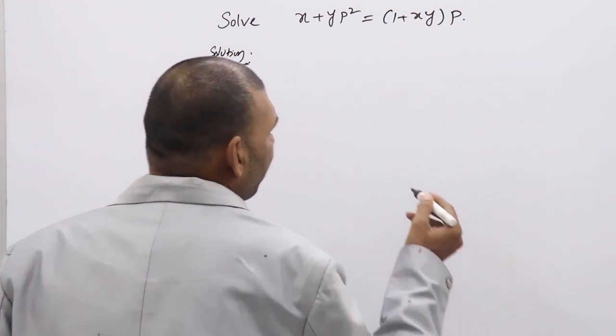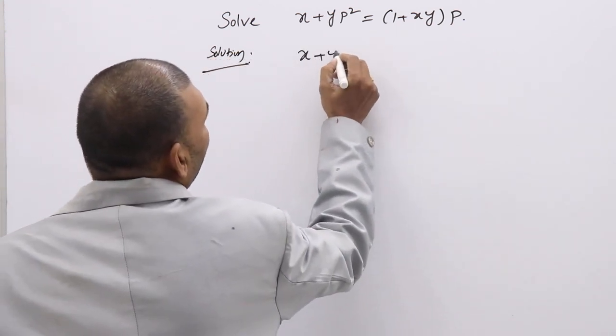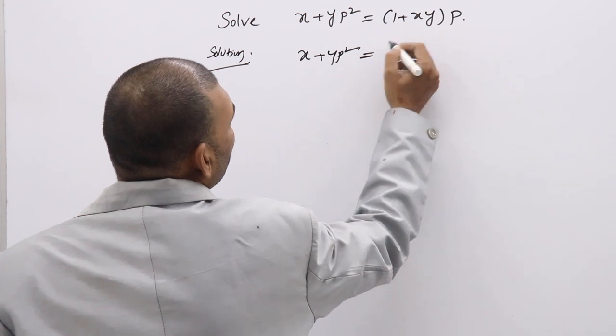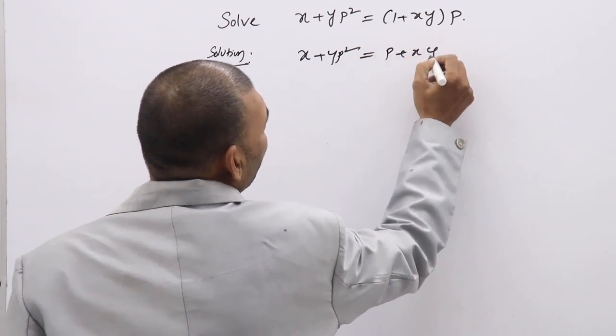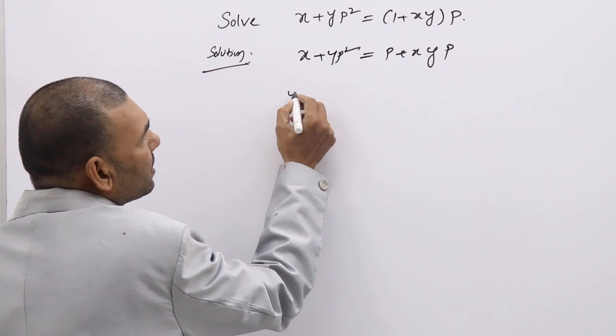So first, multiply and simplify. x plus yp squared equal to p plus xyp, which can be written like this.